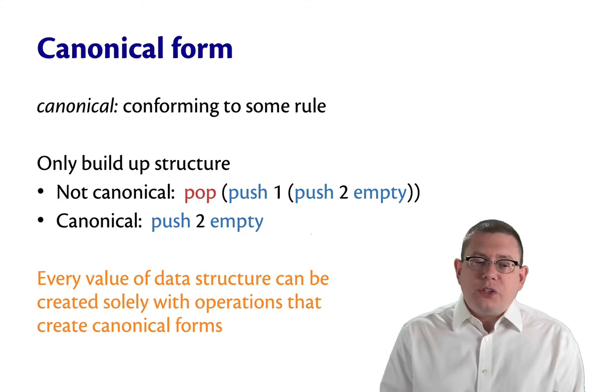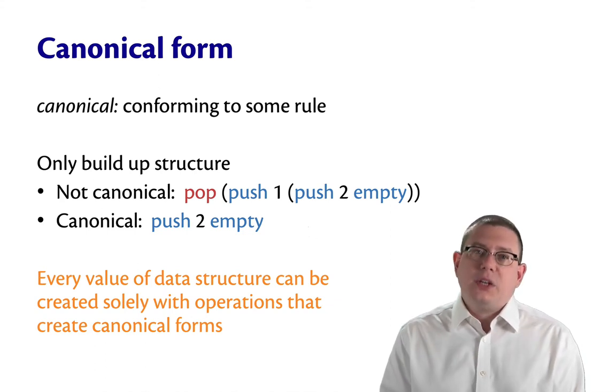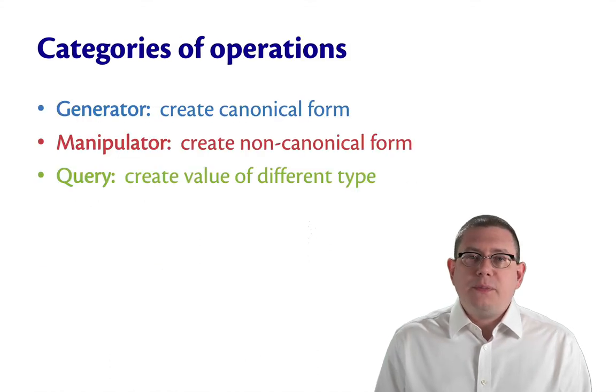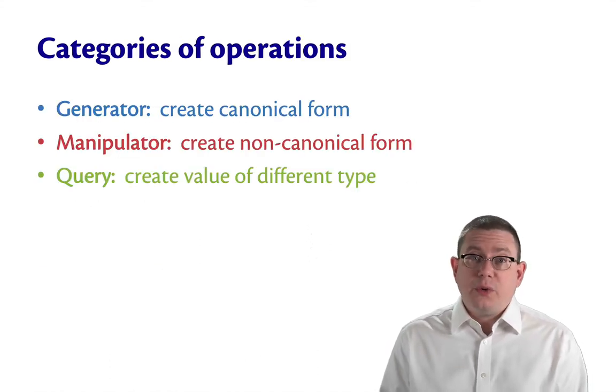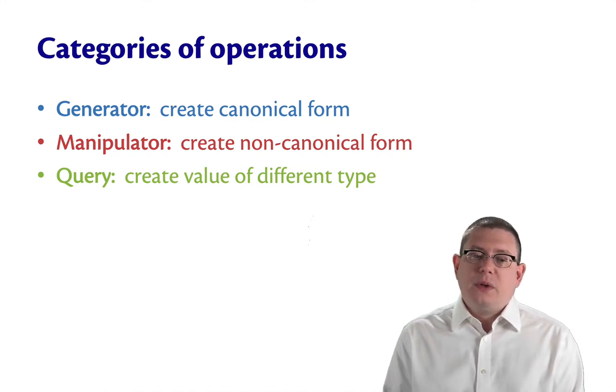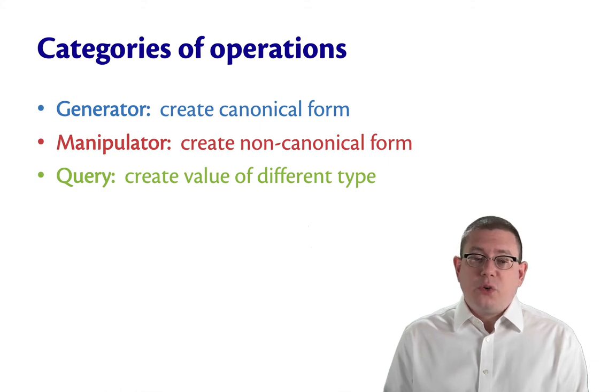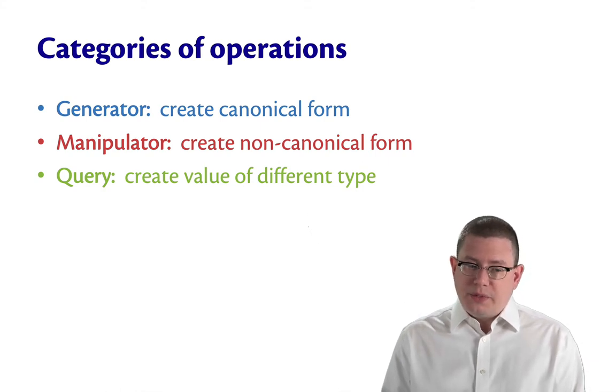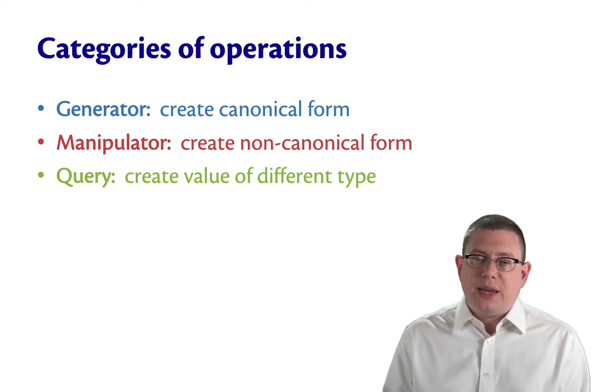Now, every value of a data structure can be created solely with operations that create these canonical forms. Let's give some names for those kinds of operations. I'm going to use the word generator to refer to operations that create canonical forms. And I'll use the word manipulator to refer to operations that create non-canonical forms. And I'll use the word query to refer to operations that create a value of a different type than the data structure itself.